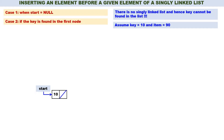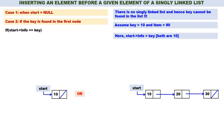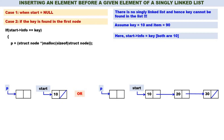Let us consider both sub-cases of Case 2: when only one node is there containing key, or many nodes are there and key is in the first node. In both cases, start of info is equal to 10 and key is also equal to 10, so start of info is equal to key, meaning the key is found in the first node. We first create a new node pointed by P: P = (struct node*) malloc(sizeof(struct node)). Then put item into P: P->info = item, so 90 goes into the new node.